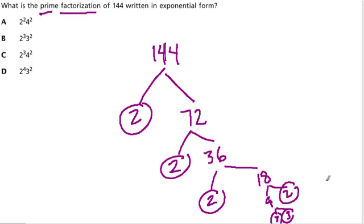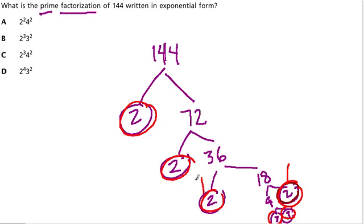So what this means is 2 times 2 times 3 times 3 times 2 times 2 times 2 is 144. Notice there are 1, 2, 3, 4 twos. So in exponential form, that's 2 to the 4th power.